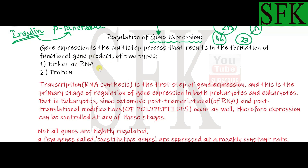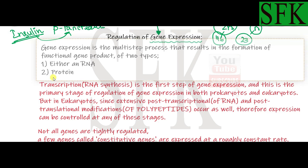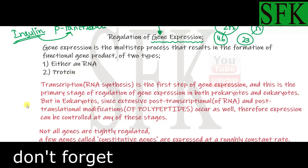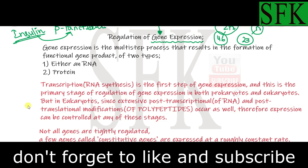The second functional product of the gene is a protein, which is the final product produced after translation of the mRNA. So these are the two main products of gene expression: mRNA produced after transcription, and protein produced after translation.